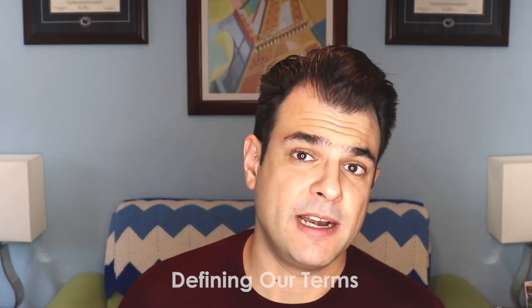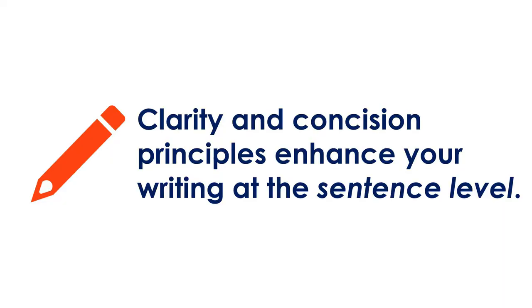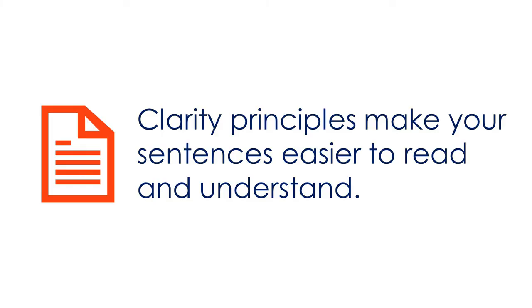Let's begin by defining our terms. The first thing to say is that the two style principles we'll be focusing on this week, clarity and concision, primarily enhance your writing at the sentence level. If you want to learn how to build strong links between sentences, how to enhance the flow of your writing, or about paragraph or document structure, we'll get to that. But this week, we're mainly looking at techniques for enhancing your writing at the sentence level. And the first and most powerful of these techniques we call clarity.